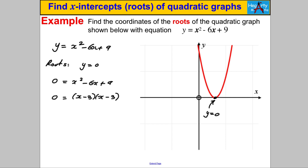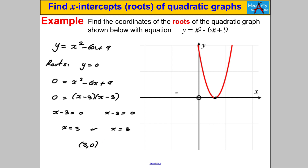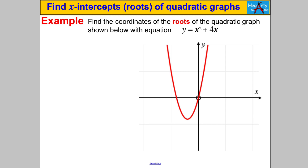That factorizes as (x - 3)(x - 3). So x - 3 = 0 or x - 3 = 0 — the exact same thing — giving x = 3 repeated. The coordinate is just (3, 0). That makes perfect sense with our graph: it doesn't have two distinct x-intercepts, it just touches at one point. This is what we call a repeated root, at the coordinate (3, 0).